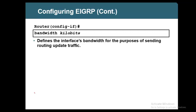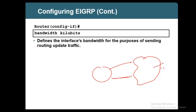The metric of EIGRP is calculated using bandwidth and delay. If you have a link whose bandwidth is 1000 Mbps and you want to make that path worse, you can decrease the bandwidth. The default bandwidth is 1000. If there are two paths to reach a destination and you want one to be primary and the other secondary, by default both will be in the routing table as primary because the cost is the same.